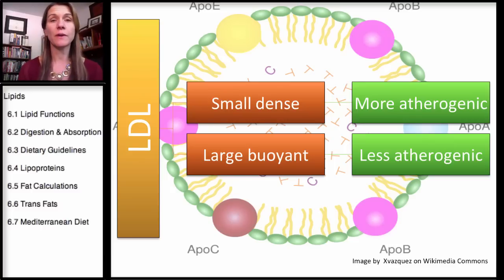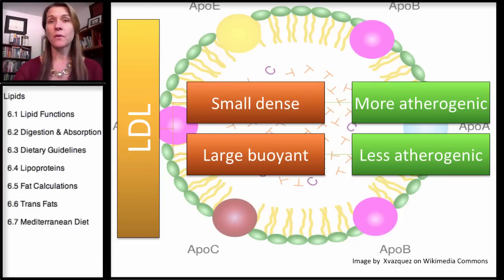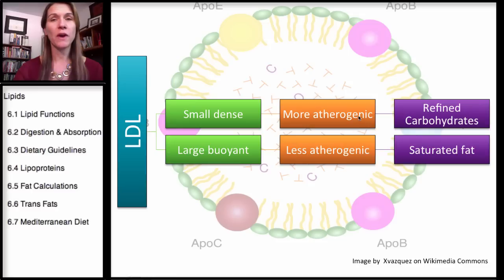Historically we have said that saturated fats and trans fats will elevate LDL, and we want to avoid them because higher LDL is associated with heart disease — therefore saturated and trans fats are linked with heart disease. What we're finding out now is that what raises the small dense LDL are the refined carbohydrates we've been discussing this semester. They're more atherogenic and they raise the small dense LDL.